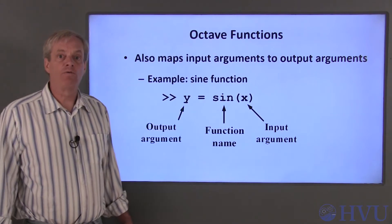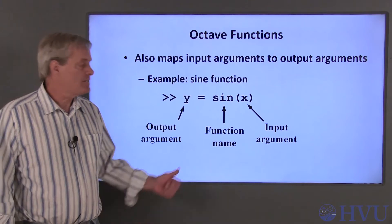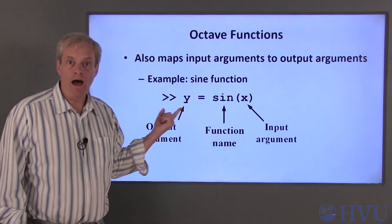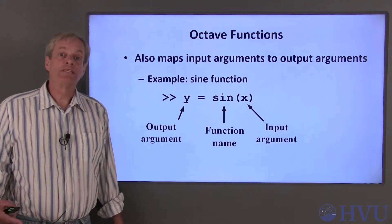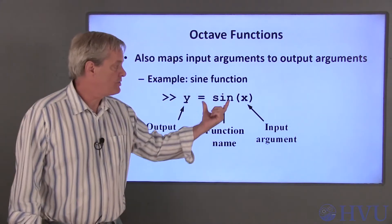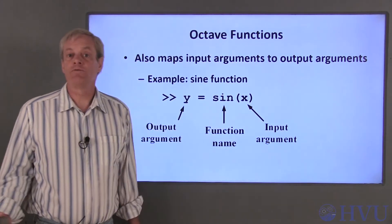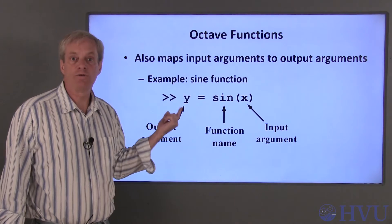The sin function returns a number corresponding to the sine of the input argument. This number gets assigned to an output variable name, which is y in our example. So in summary, the input argument, a number, is sent to our function and the function returns an output argument, another number, which gets assigned to a variable name.